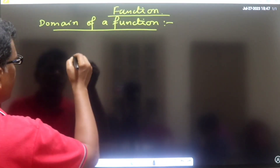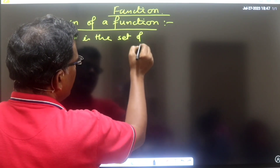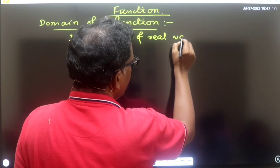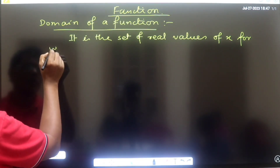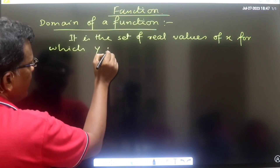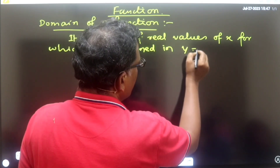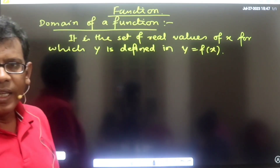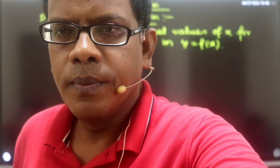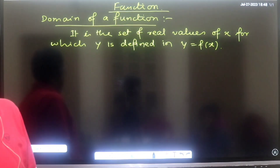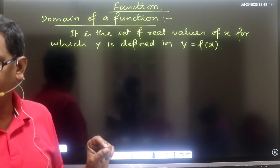Domain of a function — it is the set of real values of x for which y is defined in y = f(x). It is the set of real values of x for which y is defined. In the relation y = f(x), the set of real values of x for which y is defined is called the domain.